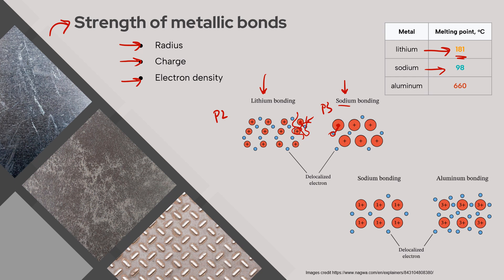Now taking charge into consideration: sodium and aluminum are both in period three, so both have just two electron energy levels after losing their valence electrons. However, sodium only gives up one valence electron whereas aluminum gives up three, so aluminum's ionic charge is much higher. Additionally, the electron density in aluminum's sea of delocalized electrons is three times greater — three valence electrons were released. This higher charge and greater electron density leads to an incredibly high melting point for aluminum.